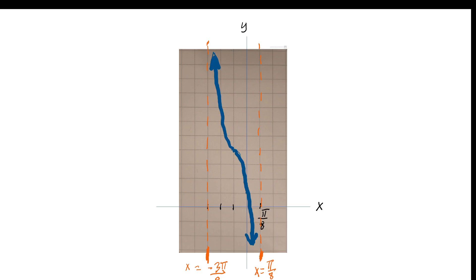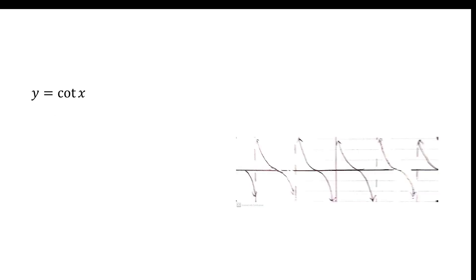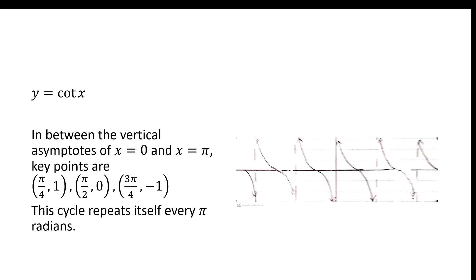Now, what if we had y equals cotangent x? We're going to take a similar process. We know that cotangent x is cos x over sin x. Following a similar strategy of putting vertical asymptotes where the denominator equals 0 and determining where the y value should equal negative 1, 0, or 1, and treating asymptotes like asymptotes, the graph of y equals cotangent x looks like what you see here. The vertical asymptotes are at the values where sin x equals 0 — i.e., the denominator of cotangent x — at negative 2 pi, negative pi, 0, pi, and 2 pi. In between those vertical asymptotes, we've got certain key points, and that cycle repeats itself every pi radians, similar conceptually to y equals tan x.